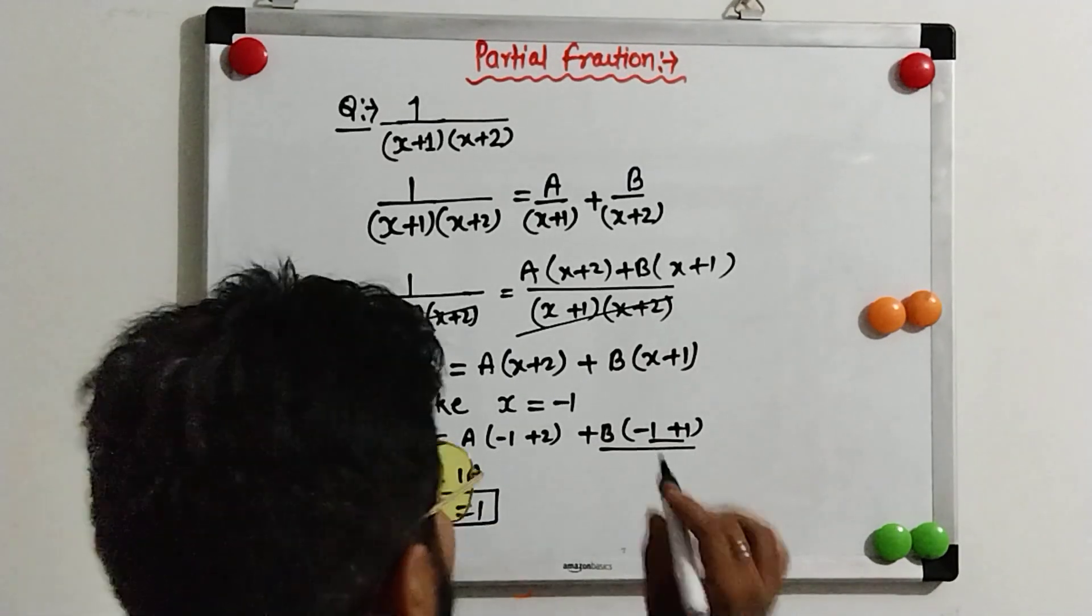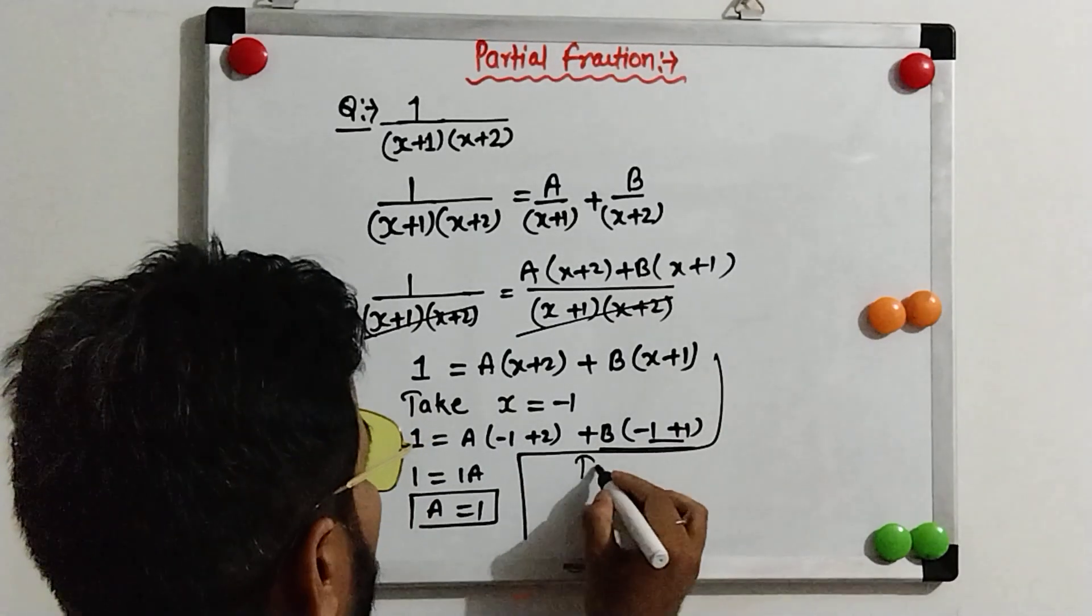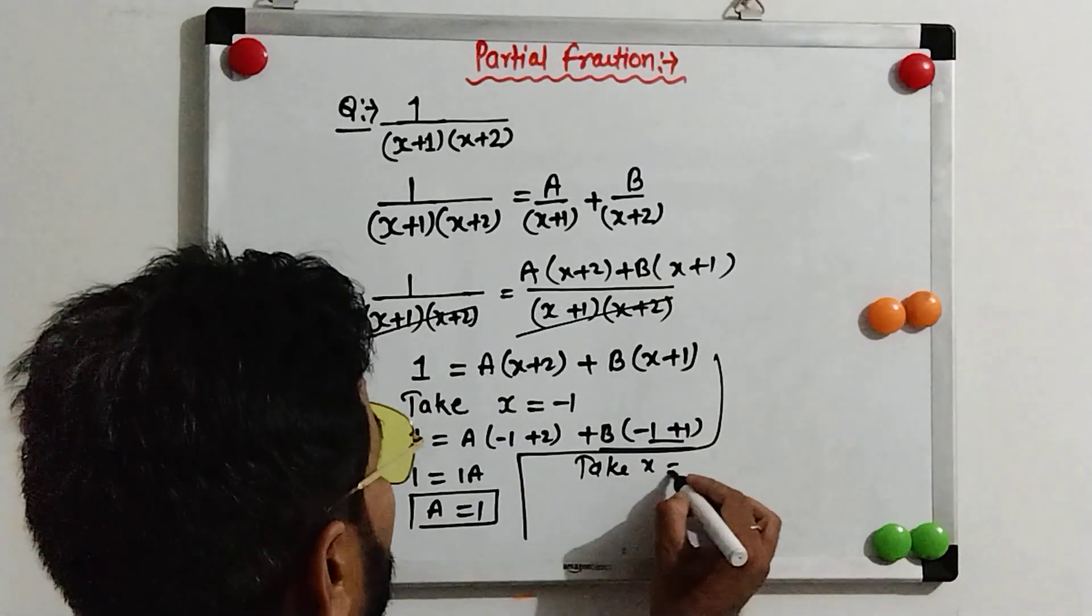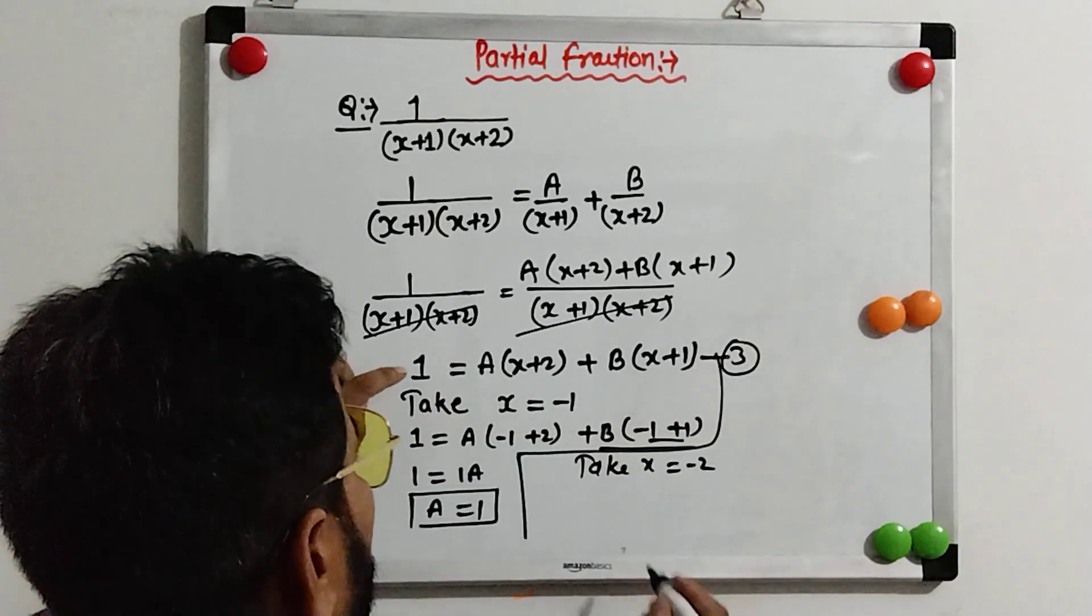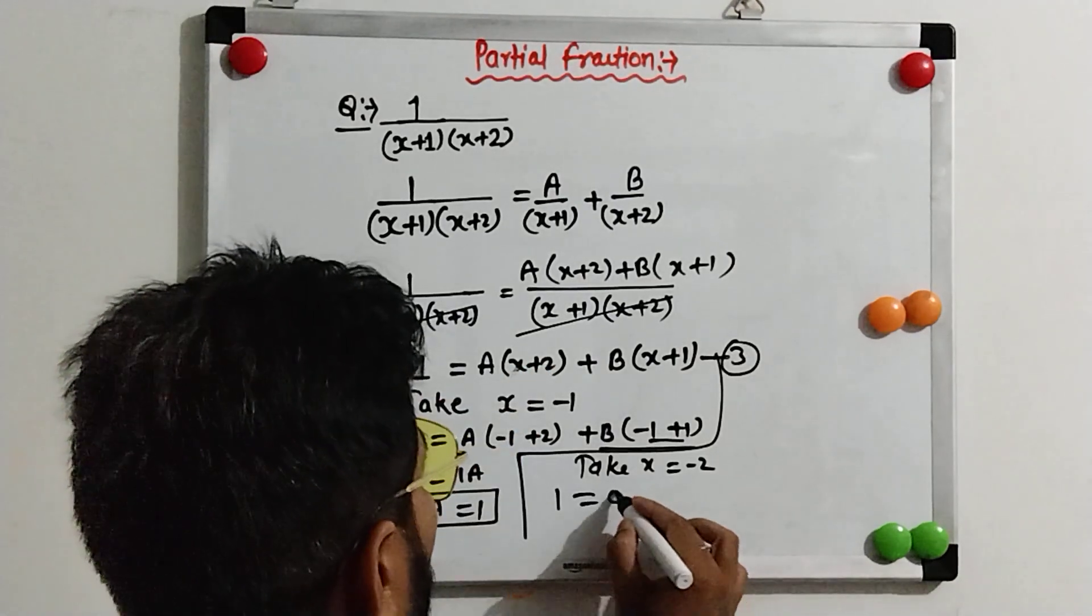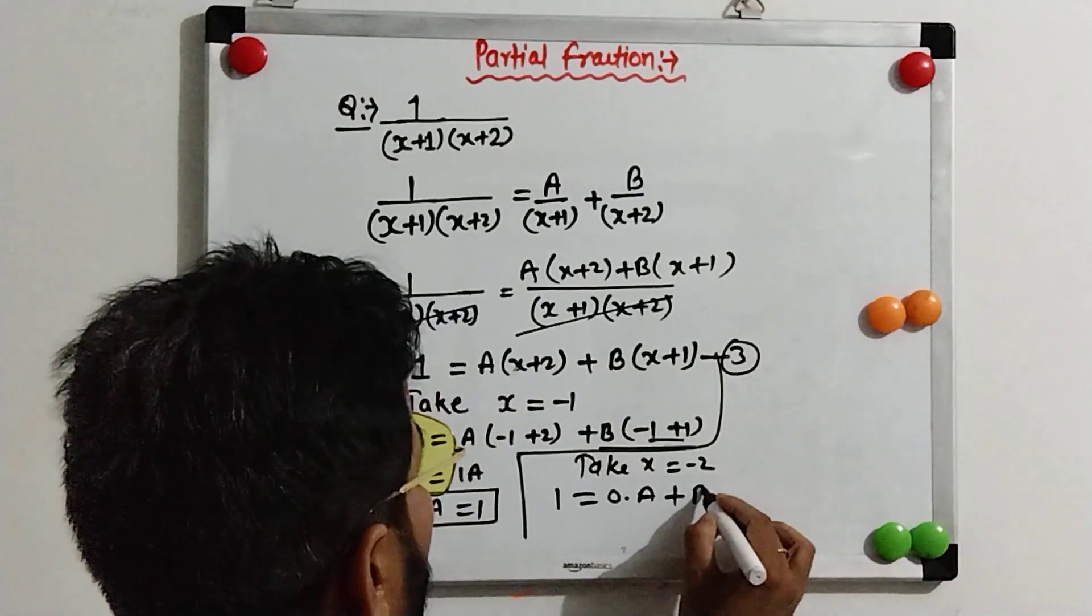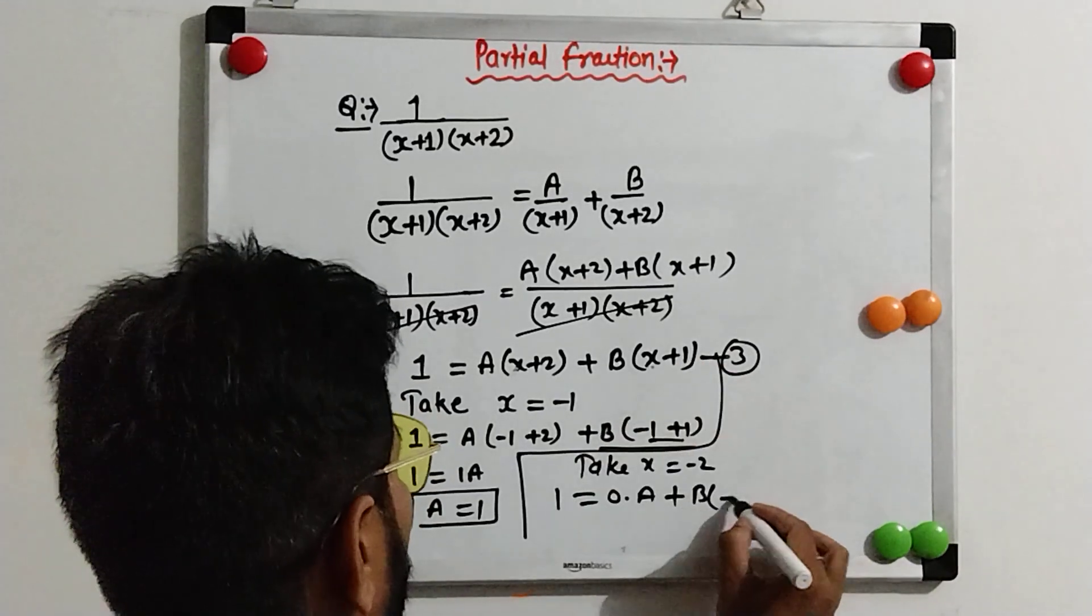Now, for B, take x equals -2. So, 1 equals A times (-2+2) plus B times (-2+1). -2 plus 2 is 0, so 0 times A plus B times (-1). We get -B equals 1.